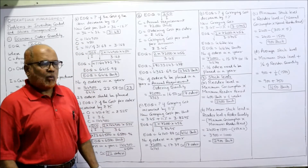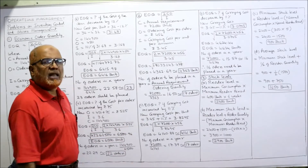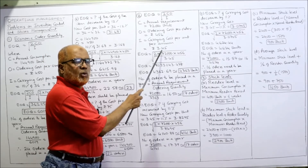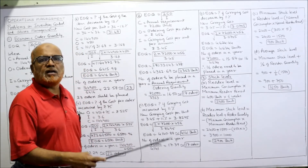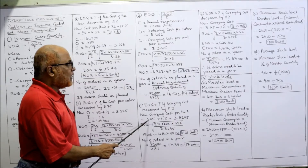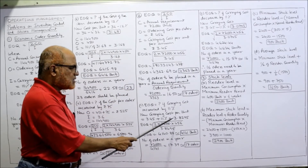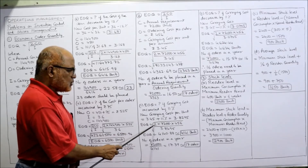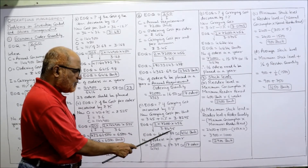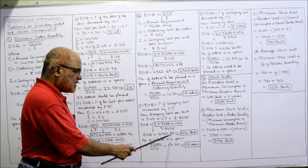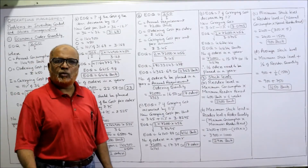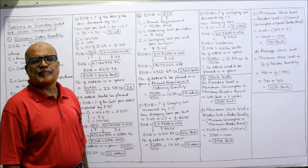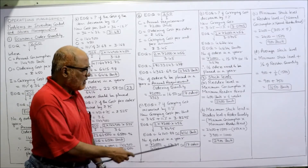What is the EOQ if carrying cost increases by 11%? Old carrying cost was Rs. 3.45. Adding 11%: 3.45 + (11% of 3.45) = 3.8295. New carrying cost = Rs. 3.8295. Substituting: √(2 × 72,000 × 456 / 3.8295) = 4140.88, rounded off to 4141 units. Number of orders = 72,000 ÷ 4141 = 17.39, rounded off to 17 orders.